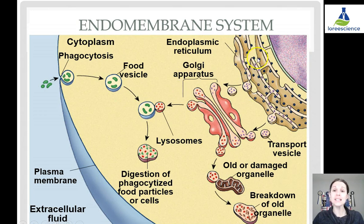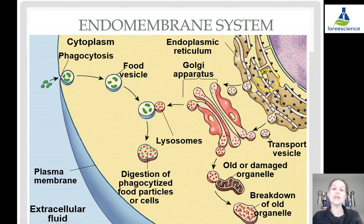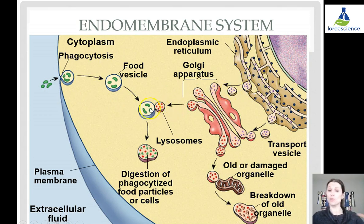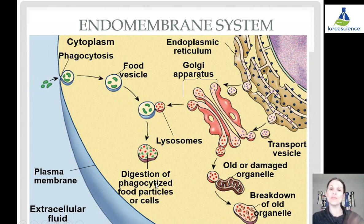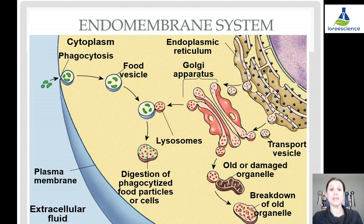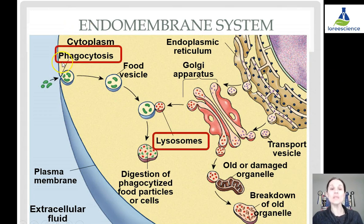The endomembrane system is a combination of the ER, the Golgi, vesicles, and lysosomes. You can see how they interact: vesicles come off and join with others, vesicles join so things can be broken down, things come into the cell, and things leave the cell — all using vesicles to transport them around the inside of the cell within the cytoplasm. This also involves phagocytosis: the process of taking things in and having lysosomes break or digest things down.